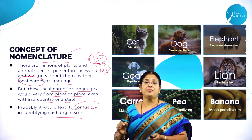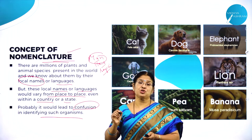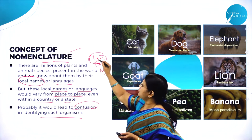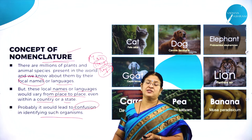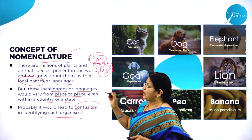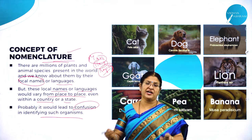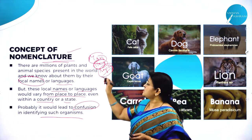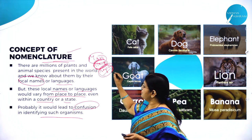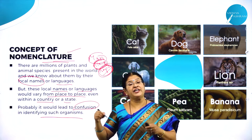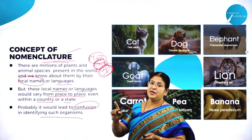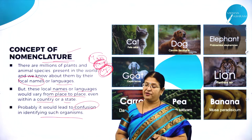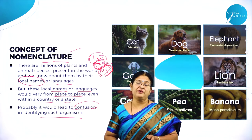The very important need is that names should be universal — wherever you go throughout the world, it should be common. For example, Homo sapiens is the scientific name given to man, which is universal. Also, this name is not given to any other organism, so there will be no confusion. Therefore, naming — nomenclature — is very important.